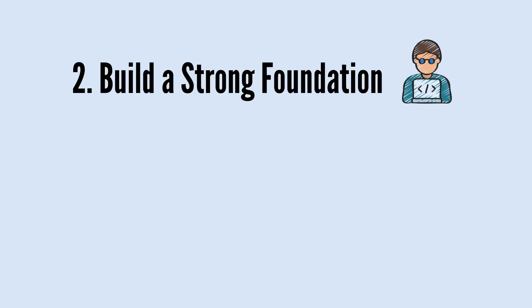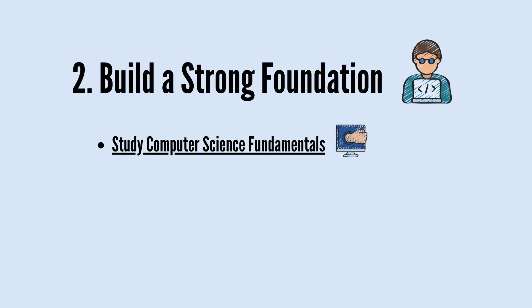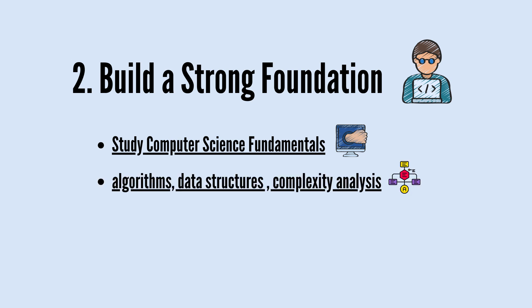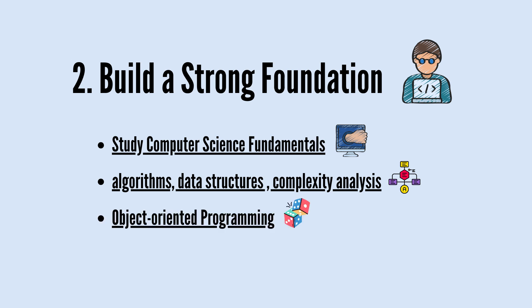In the second step, you can learn the basics of computer science. You can learn about algorithms, data structures, and complexity analysis. Try to understand the basics of object-oriented programming. The more you focus on this step, the more comfortable you will feel when working on complex topics in the future. It is really important to learn the basics of computer science.